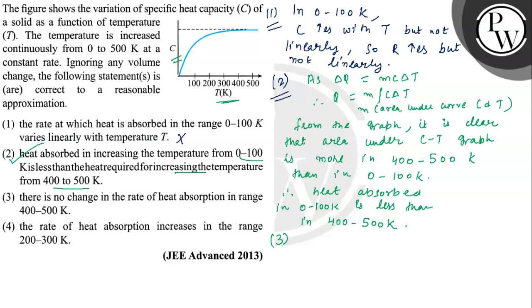In option 3, for the range 400 to 500 Kelvin, C remains constant.